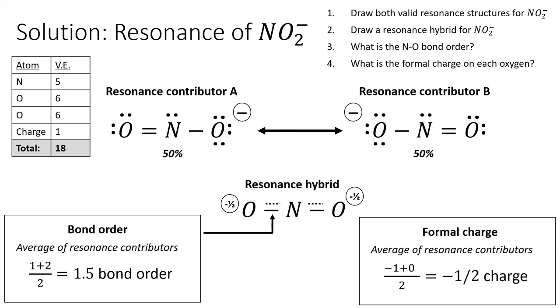We'll follow a similar procedure to calculate the formal charge on oxygen. In resonance structure A, the right oxygen has a negative one charge. And in resonance structure B, this oxygen has no charge. So, we take the average between negative one and zero, which gives us negative one-half. The other oxygen has the same formal charge, negative one-half. In other words, the negative charge on this species is evenly split between both oxygen atoms.